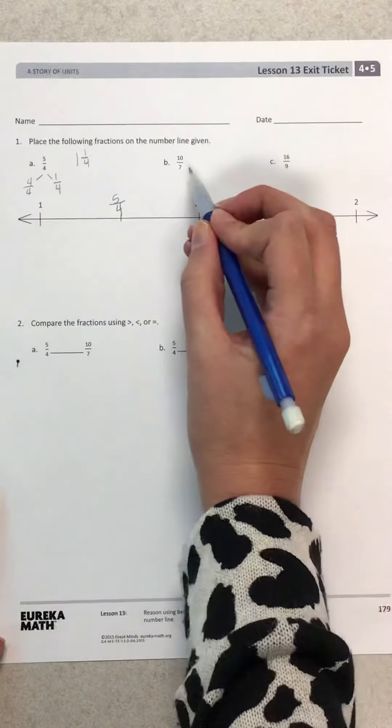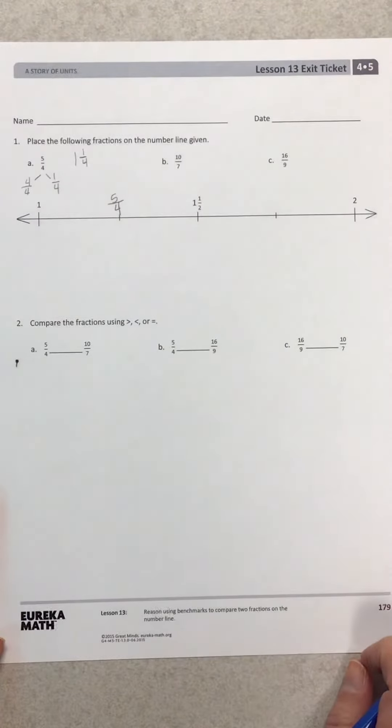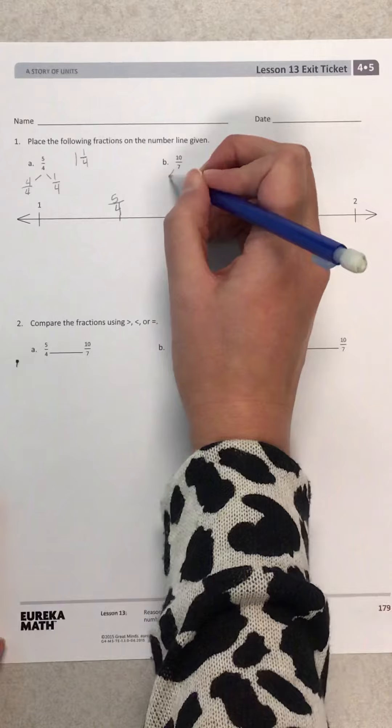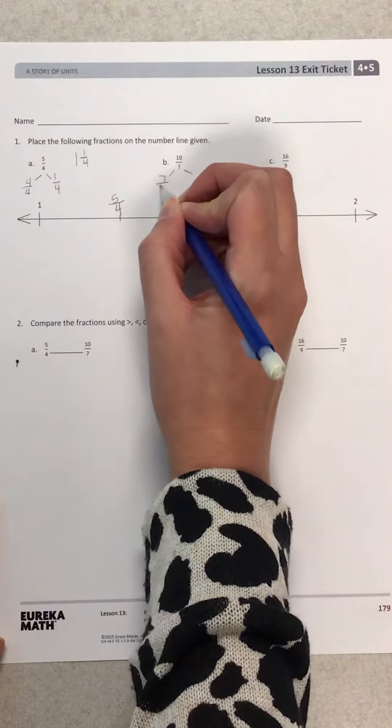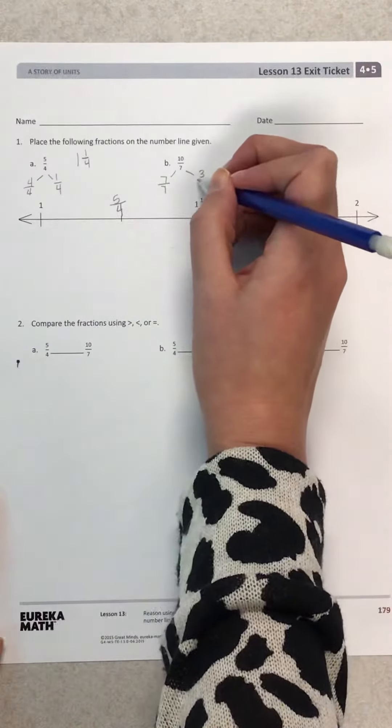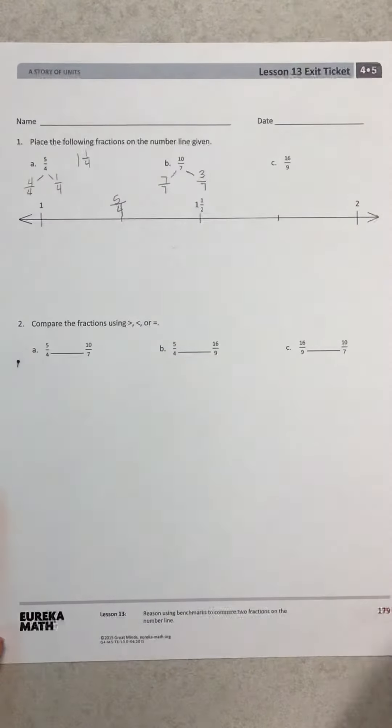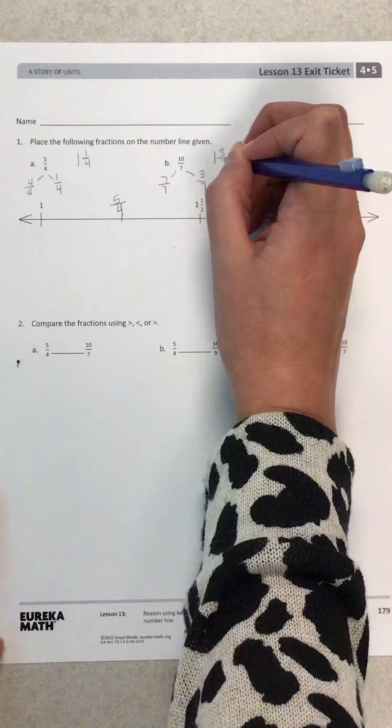So let's make our number bonds for 10 sevenths and 16 ninths, and then I'm going to have you plot them on your number line on your own. So when I break my number bond of 10 sevenths up, remember I'm looking to make one whole, and that would be 7 sevenths. And I need to think how many were left. Well, that would be 3 sevenths. So I can rename that as 1 whole and 3 sevenths.